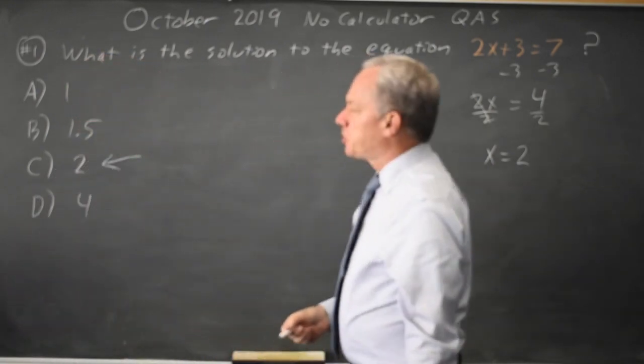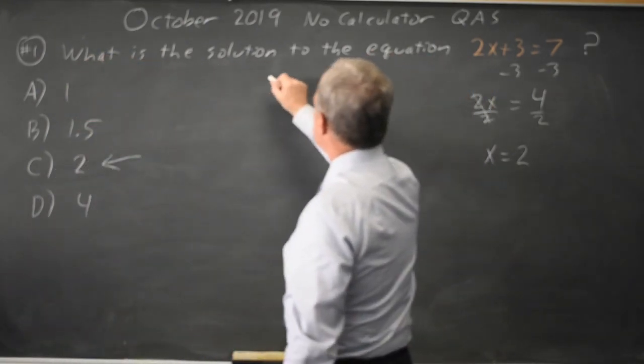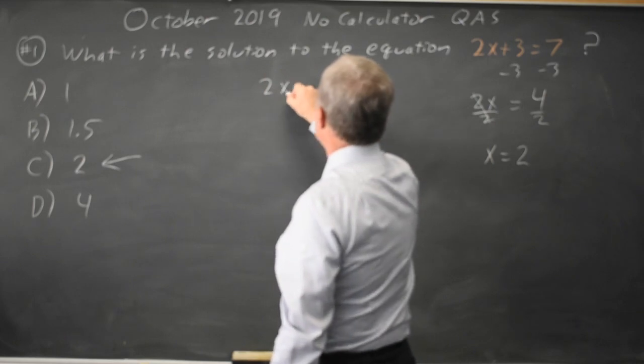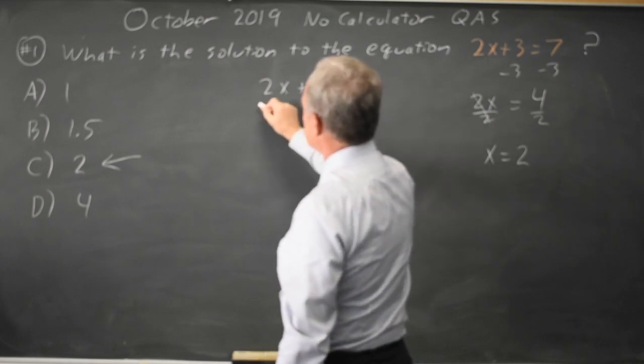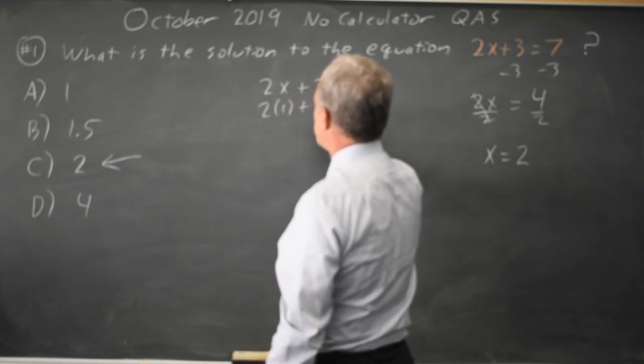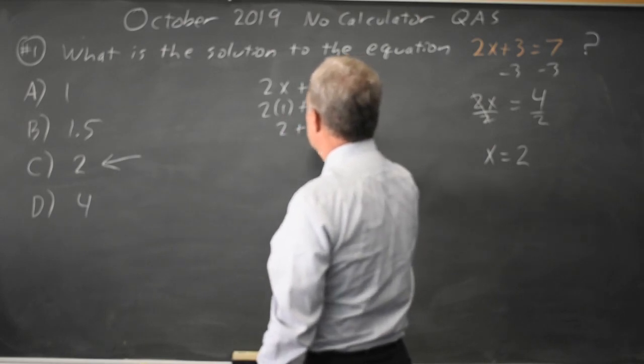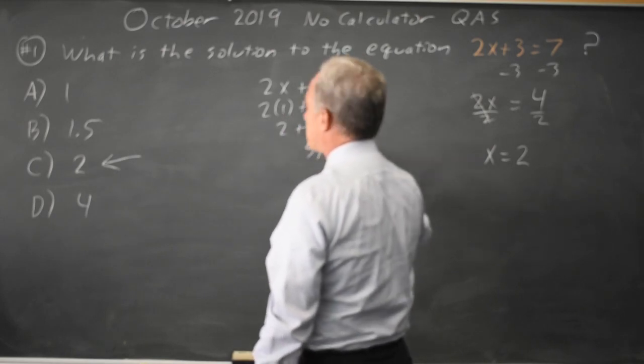Alternatively, I can substitute in my answer choices. So 2x plus 3 for x equals 1 would be twice 1 plus 3 is 2 plus 3, which equals 5, and that's not equal to 7.